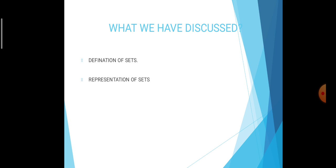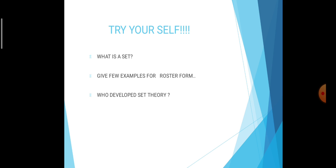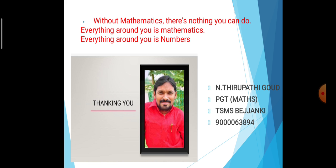So, what we have discussed today: the definition of set — a collection of well-defined objects — and representation of sets in two ways: roaster form and set builder form. Try yourself: What is a set? Give a few examples of roaster form. Who developed set theory? Without mathematics, there is nothing you can do. Everything around you is mathematics. Everything around you is numbers. Thank you. — Tirupati, PGT Maths, TS Model School, Bejjanki.